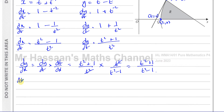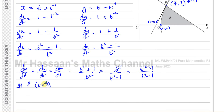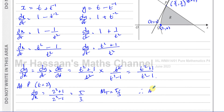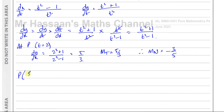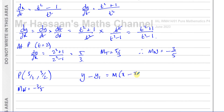At point P where t equals 2, dy/dx equals (2 squared plus 1) over (2 squared minus 1), which is 5 over 3. So that's the gradient of the tangent. Therefore the gradient of the normal is the negative reciprocal of that — the same numbers switched upside down with a change of sign, giving minus 3 fifths. The point P has coordinates (5/2, 3/2).